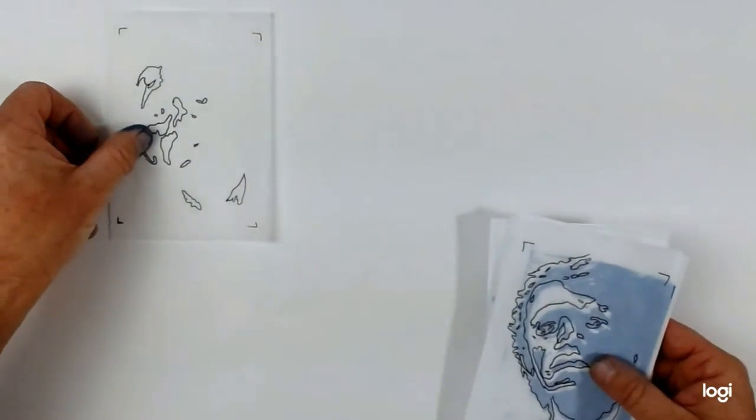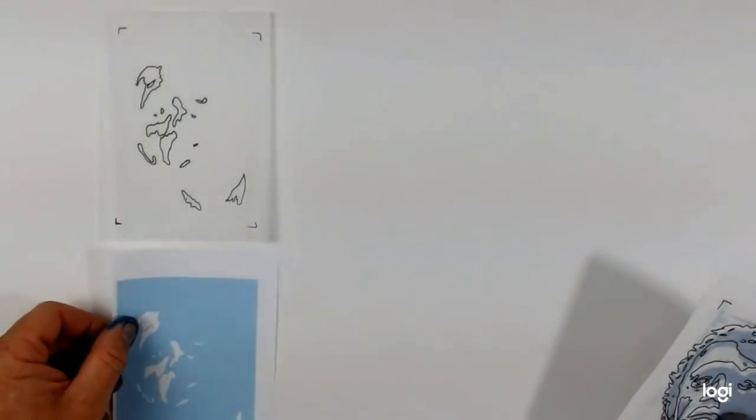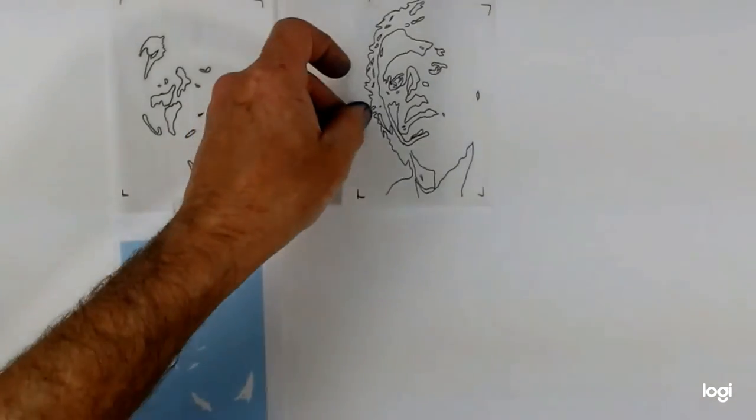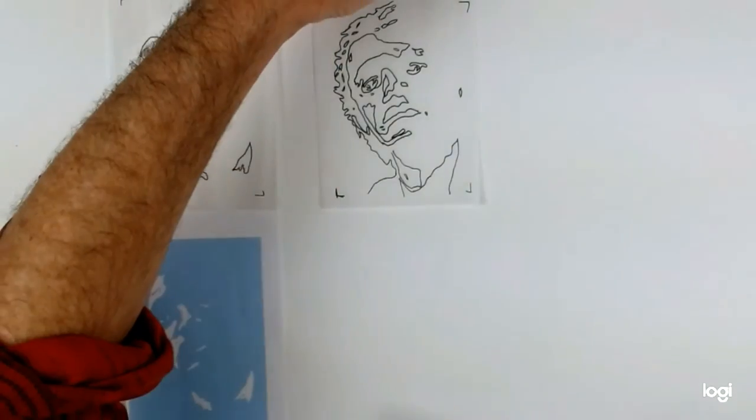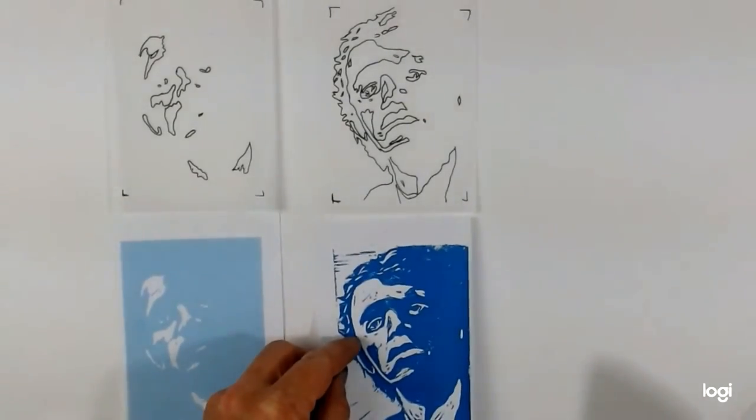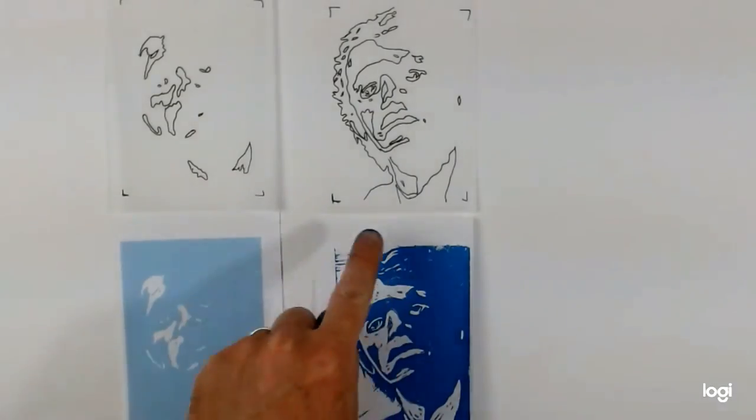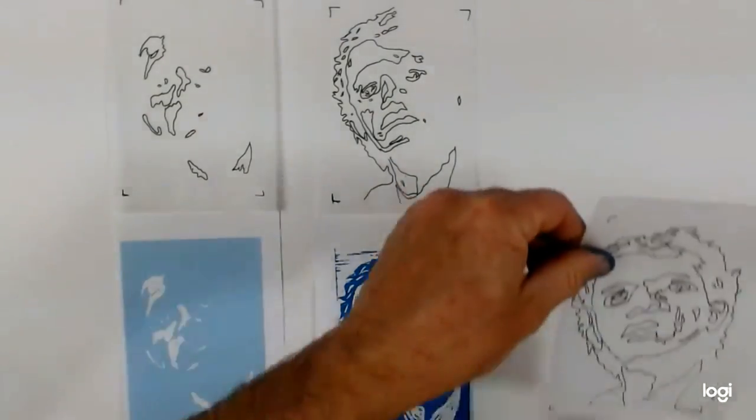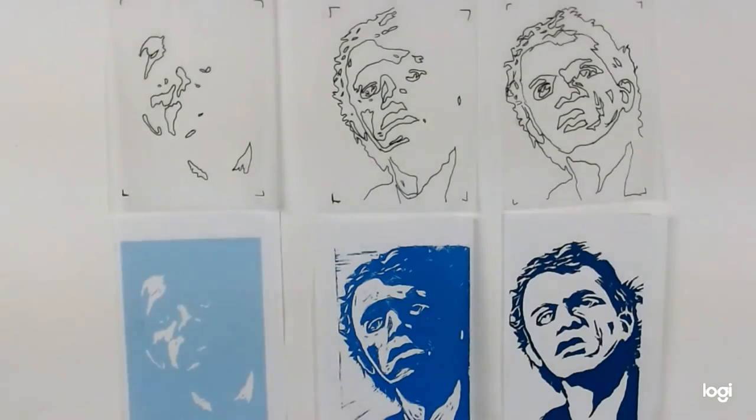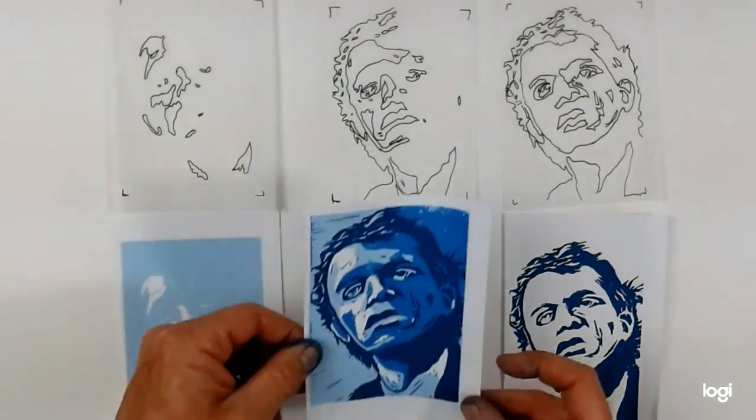What I have here is the tracings for doing this. So there's tracing one, and this leads to that print. So that is the area that is being printed. Tracing two, and again what I have printed is just the plate at that stage so you can see everything that has been cut away, all the white areas. Tracing three for the final step, and you can see that final layer printed. All that comes together to produce that.